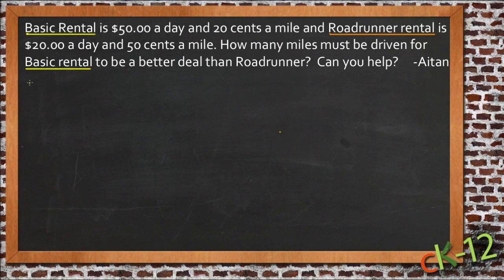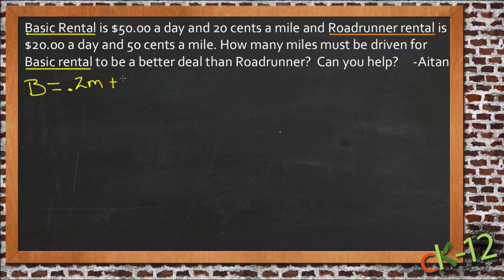We're going to say that B is the price for Basic Rental, which would be 0.2 times the number of miles — we'll call that M — plus $50. And then Roadrunner Rental can be R, and it would be 0.5 times the number of miles, plus $20.